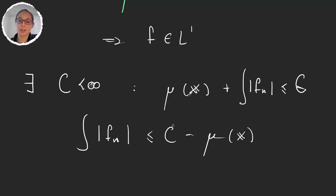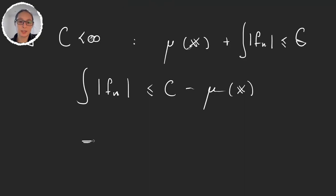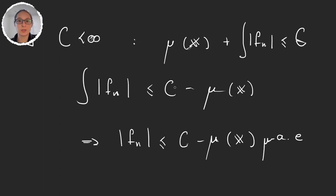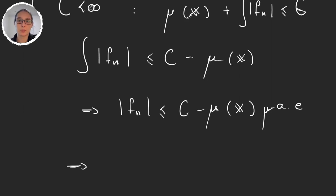And what I can do is take C large enough so that this number is positive. And then because we have this, this implies that |f_n| is less than or equal to this number almost everywhere, μ almost everywhere. And so we were able to bound the sequence by a positive number because I can just take C large enough. Great, we have found that function g.